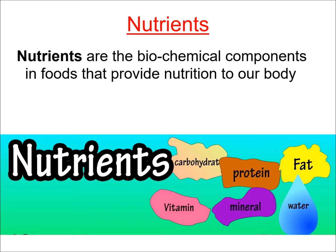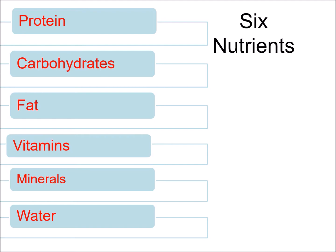First of all, nutrients. What are called nutrients? Nutrients are the biochemical components which are present in foods and that provide nutrition to our body. Biochemical means the chemical substances that are basically present in living organisms. There are different types of nutrients in food which give us nutrition.